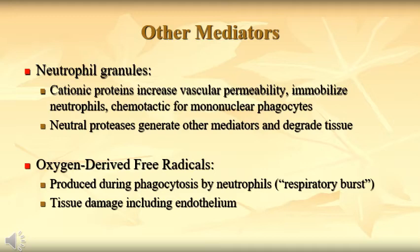There are other mediators like neutrophilic granules. Neutrophil granules contain cationic proteins that increase vascular permeability and immobilize neutrophils, and are chemotactic for mononuclear phagocytes (macrophages). Neutral proteases generate other mediators and degrade tissue. Oxygen-derived free radicals — ROS — are involved in the killing of phagocytosis. Neutrophils undergo respiratory bursts producing oxides and superoxides. This is basically to kill the microbes, but if it comes into contact with host cells, they can cause tissue damage also.